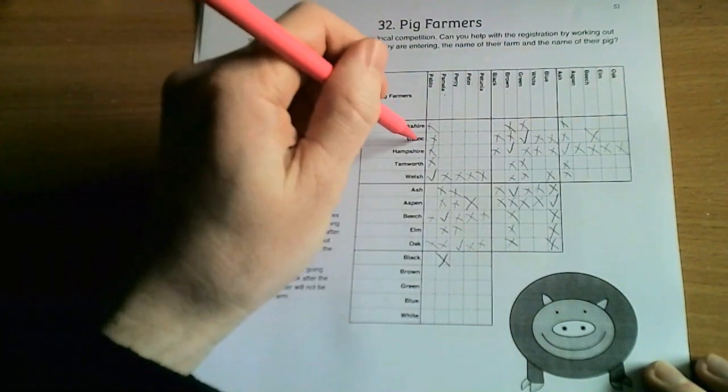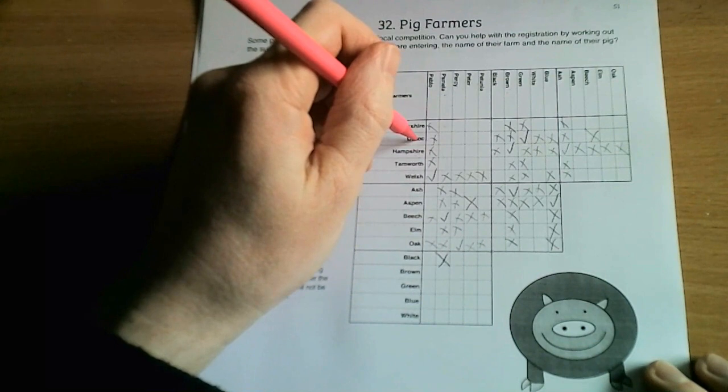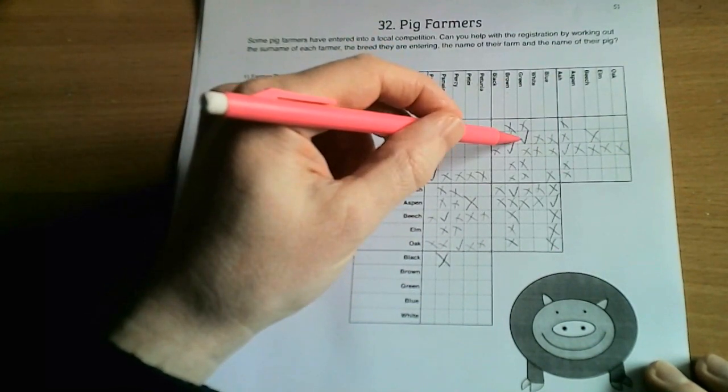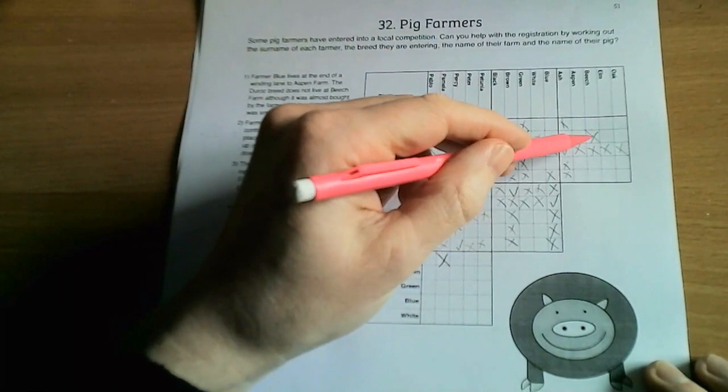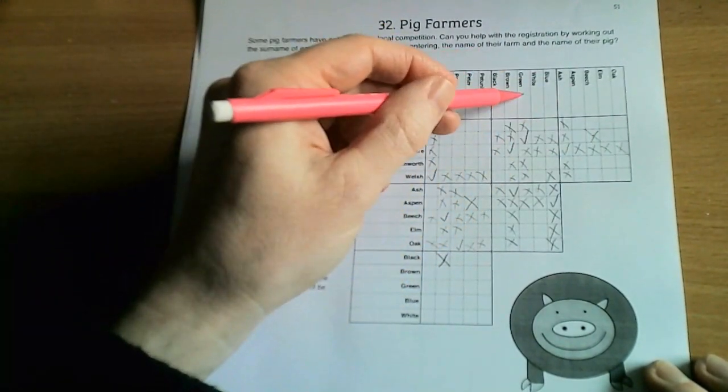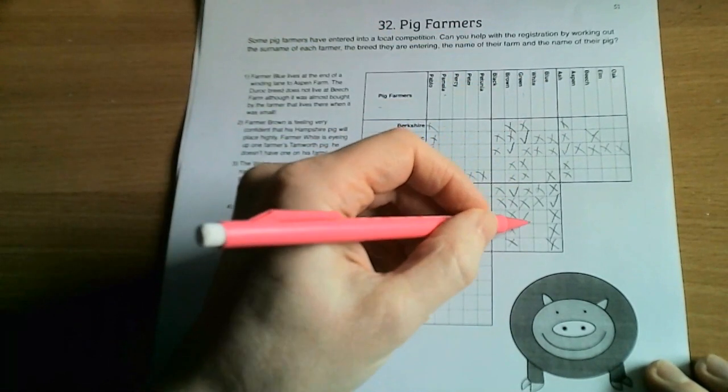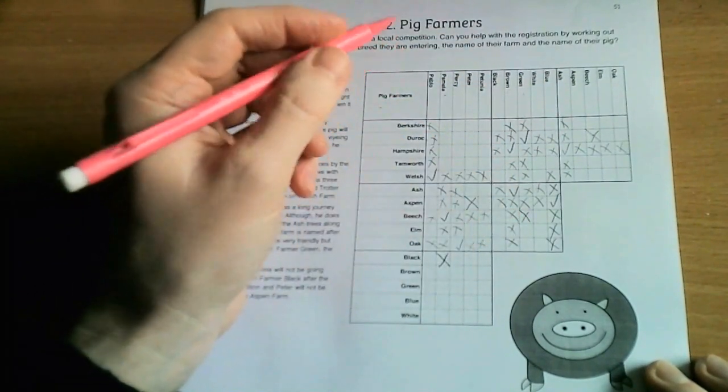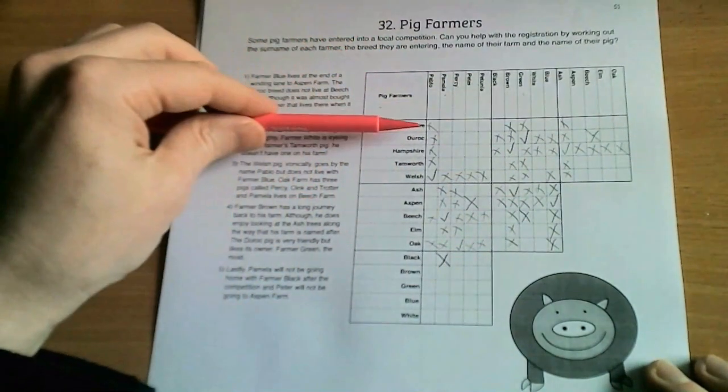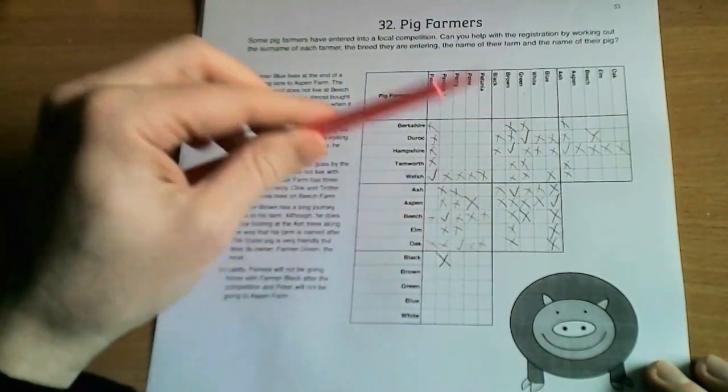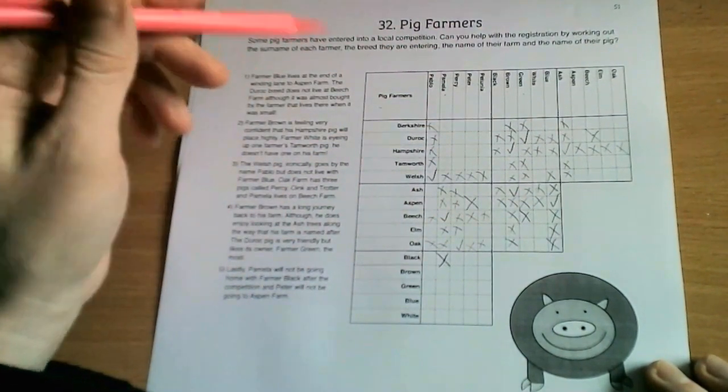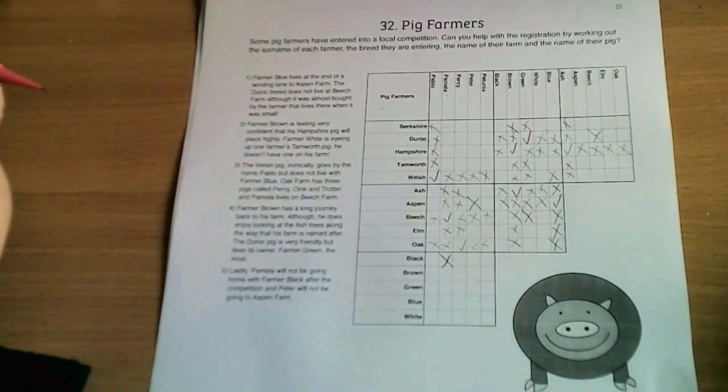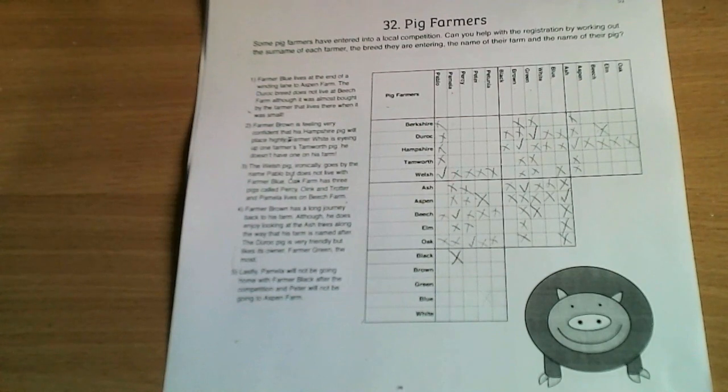We know that Farmer Green is not Beech Farm, and so you can read across each of the rows and columns, and where you have more than one piece of information, then you can use that to help you make deductions as you go through solving the puzzle.